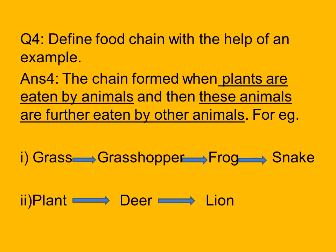Example one: grass is eaten by grasshopper, grasshopper is eaten by frog, and frog is eaten by snake. Example two: plant is eaten by deer, which is the herbivore and primary consumer, and the deer is eaten by a lion, which is the carnivore and ultimate consumer. I hope you all have understood the questions and answers properly. Thank you.